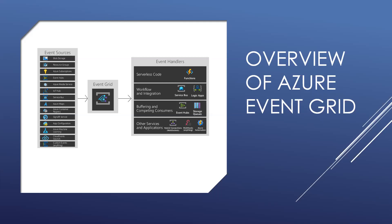Events describe what happened. Event Sources indicate where the event took place. Topics are the endpoint where publishers send events. Event Subscriptions are the built-in mechanism to route events, sometimes to more than one handler. Subscriptions are also used by handlers to intelligently filter incoming events. Event Handlers are the app or service reacting to the event.